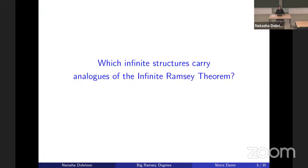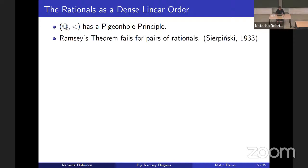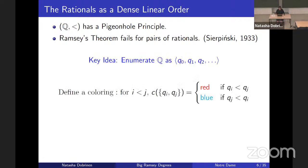This leads us to the question of which infinite structures carry analogs of the infinite Ramsey theorem. One of the simplest non-trivial structures is the rationals as a dense linear order. The rationals have a pigeonhole principle, because if you color the rationals into finitely many colors, there will be a subset in one color which is again a dense linear order — meaning you are isomorphic to the original structure. However, if you try to color pairs of rationals and you want to find a subcopy of the rationals with one color, you would be sunk because of a special example due to Sierpinski.